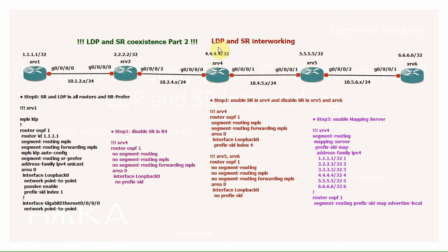In Step 1, we disable segment routing in XRV4. If we trace from XRV1 to XRV6, we expect traffic in XRV1 to still be forwarded with a segment routing label. However, in XRV2, the router cannot forward traffic with an outgoing segment routing label because XRV4 does not support segment routing. Instead, XRV2 swaps the incoming segment routing label with an outgoing LDP label — specifically the LDP label that XRV4 assigns for destination 6.6.6.6. This label swap happens automatically without any extra configuration.